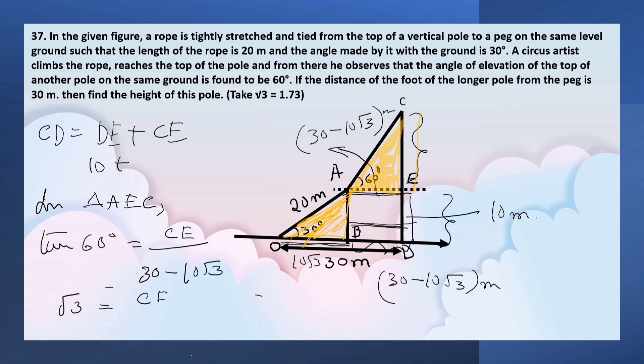Tan 60° is √3, so √3 equals CE by (30 minus 10√3). This implies that CE equals 30√3 minus 30. So CE equals 30(√3 minus 1) meters.